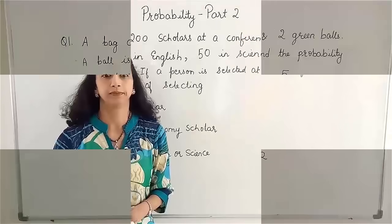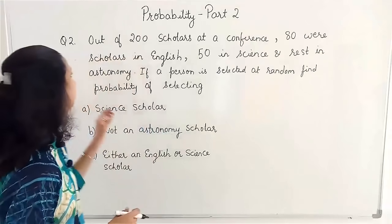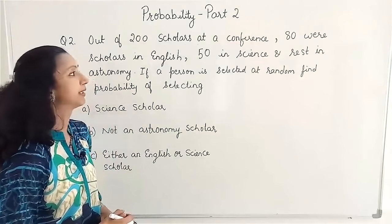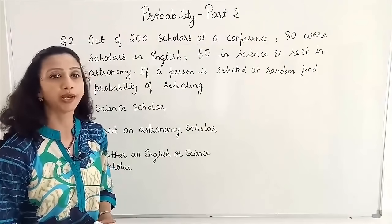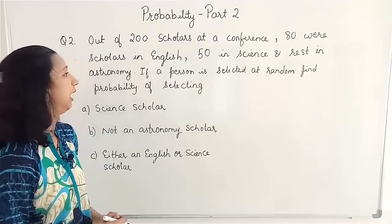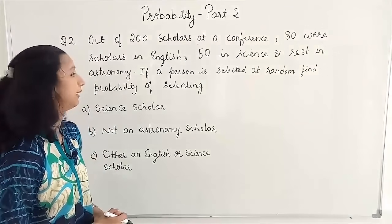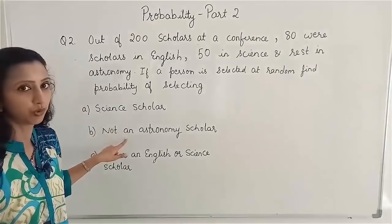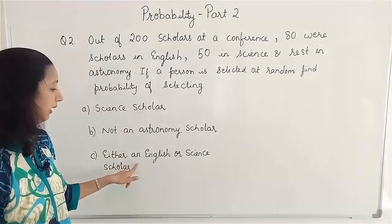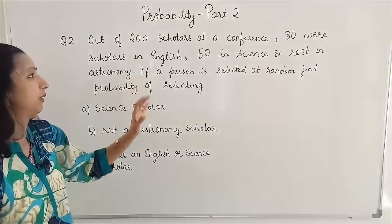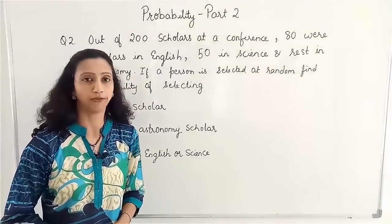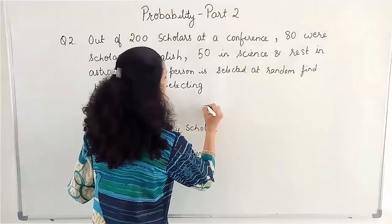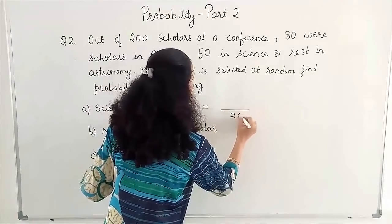We will do one more example. Out of 200 scholars at a conference, 80 were scholars in English, 50 in Science, and the rest in Astronomy. If a person is selected at random, find the probability of selecting: a Science scholar, not an Astronomy scholar, and either an English or a Science scholar. There were 200 people in all, out of which 80 were English scholars. The total number of outcomes is 200, which comes in the denominator.